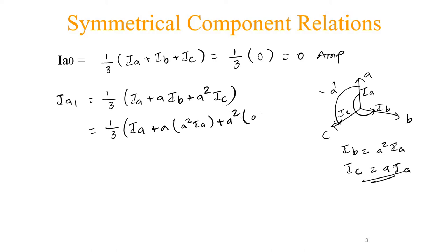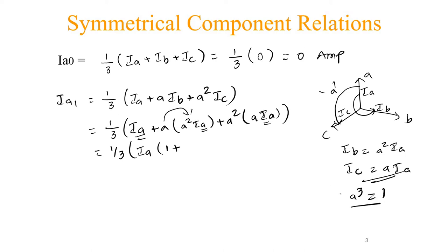Now simplifying: one-third times Ia, taking Ia as common — Ia into (1 plus A·A² plus A²·A), which gives one-third·Ia·(1 plus A³ plus A³). Since A³ equals 1, this becomes one-third·Ia·(1 plus 1 plus 1), so the three and the three cancel.